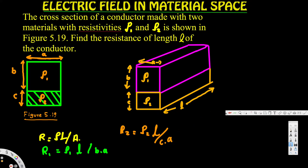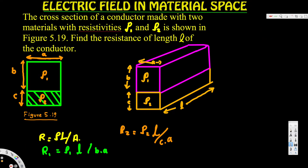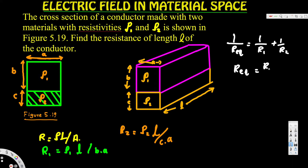We have R1 and R2, and when resistances are in parallel, the equivalent resistance is given by: 1 over R_eq equals 1 over R1 plus 1 over R2. Therefore, R_eq equals R1 times R2 divided by R1 plus R2.